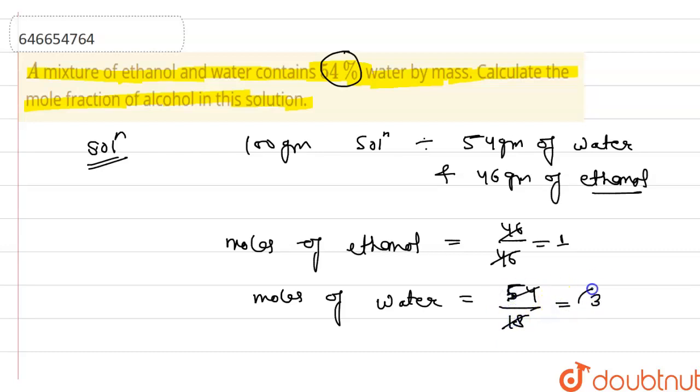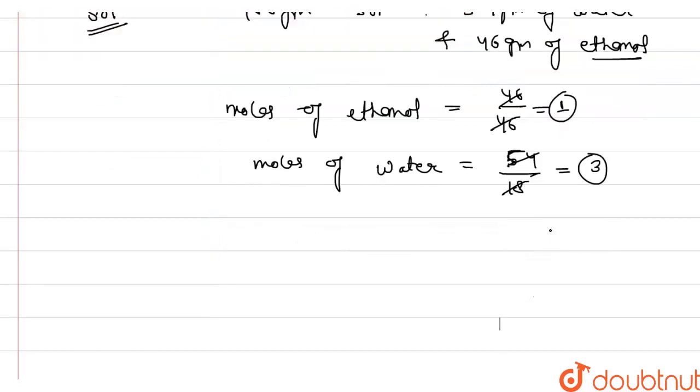Okay, so now you can calculate mole fraction of ethanol according to formula. Mole fraction of ethanol, that is C2H5OH, is equal to moles of ethanol, that is 1, upon total moles, that is 1 plus 3, that is 1 by 4, means 0.25. So mole fraction of ethanol will be 0.25.